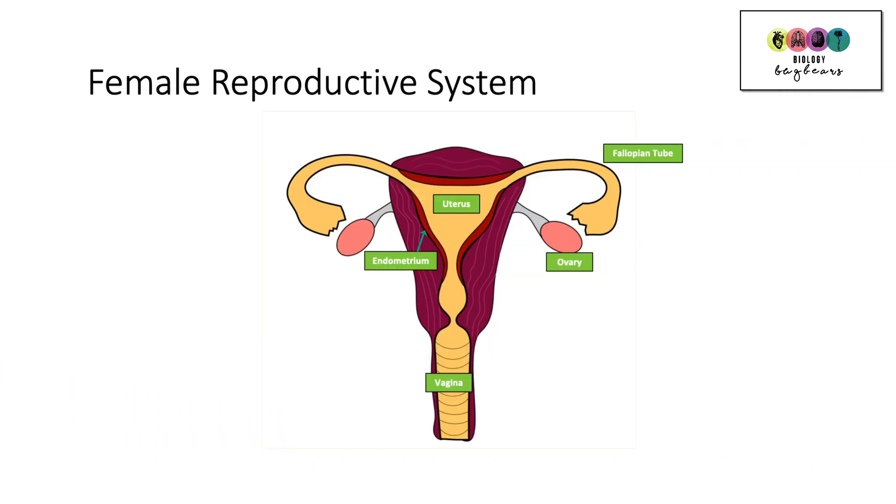The female reproductive system is always worth practicing as well. It's much easier than the male system, but it still can be tricky to draw. So practice it and mark in the key details on your diagrams.